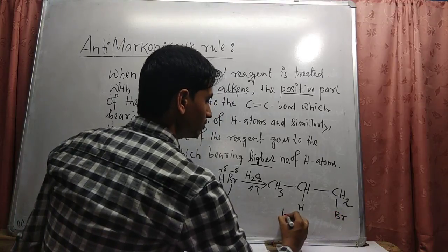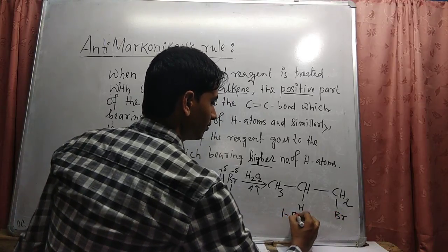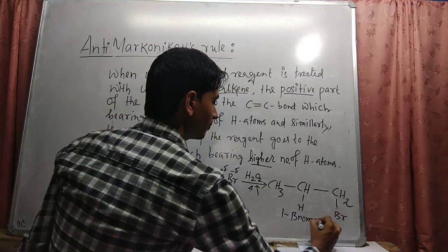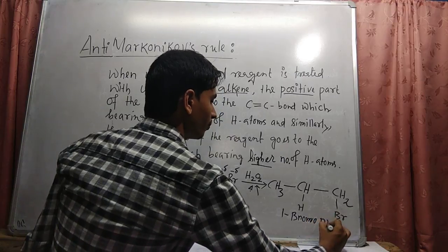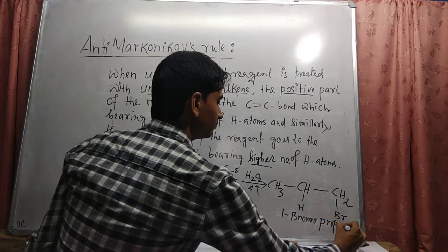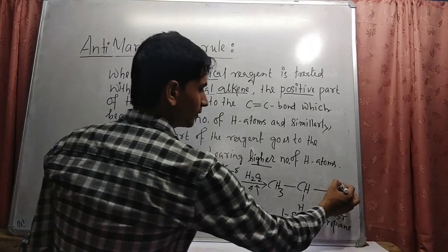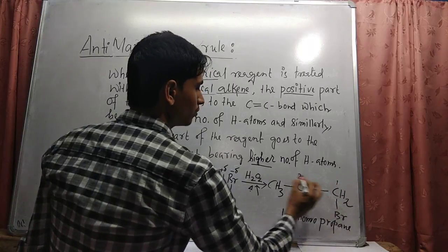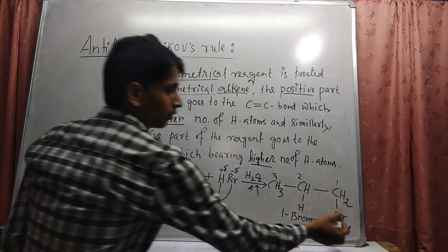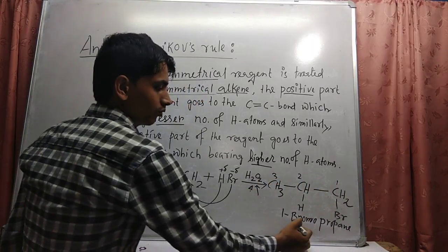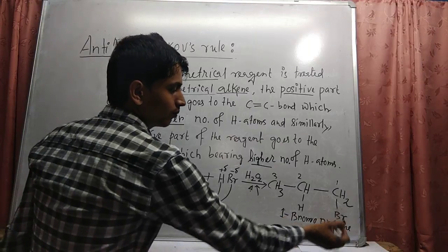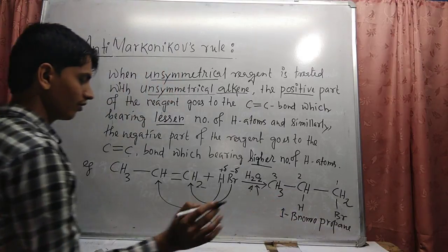One bromopropane will be formed. Counting the carbons: one, two, three — in the first position, one bromine group is attached. That is why 1-bromopropane will be formed.